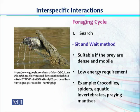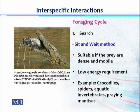The predators are just sitting and waiting for their prey, saving a large amount of energy that would otherwise be consumed in the process of searching. Many animals follow the sit-and-wait method, mostly aquatic invertebrates. Examples include crocodiles, spiders, aquatic invertebrates, and praying mantises.